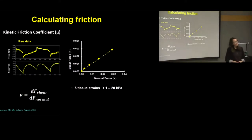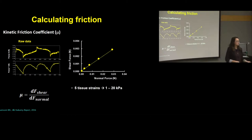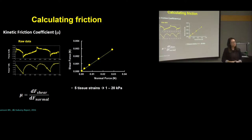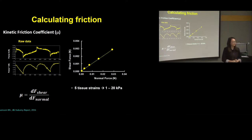To calculate the kinetic coefficient of friction, we take torsional forces and normal forces, calculate an average, and plot five points corresponding to five tissue strains from 1 to 20 kilopascals. We fit a line through those points, and the kinetic coefficient of friction is calculated as the derivative of the shear force over the derivative of the normal force.